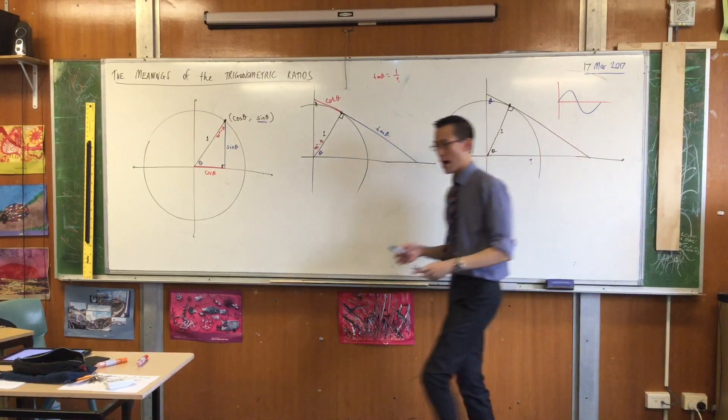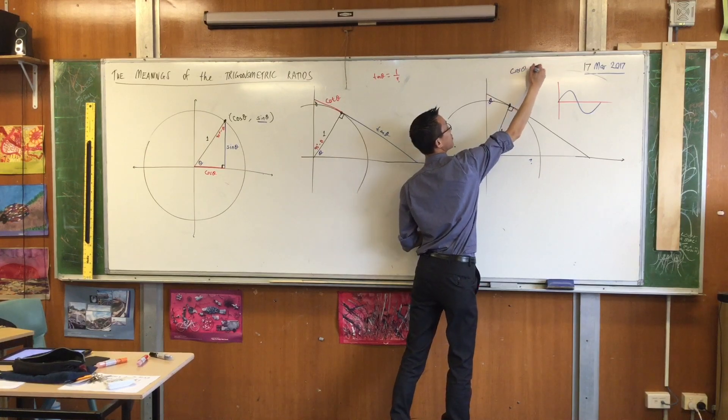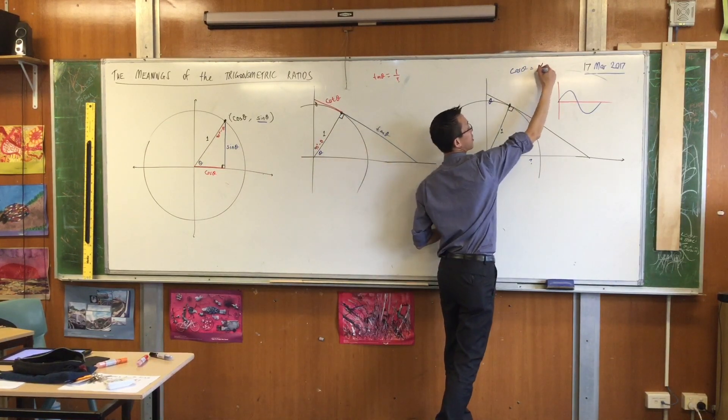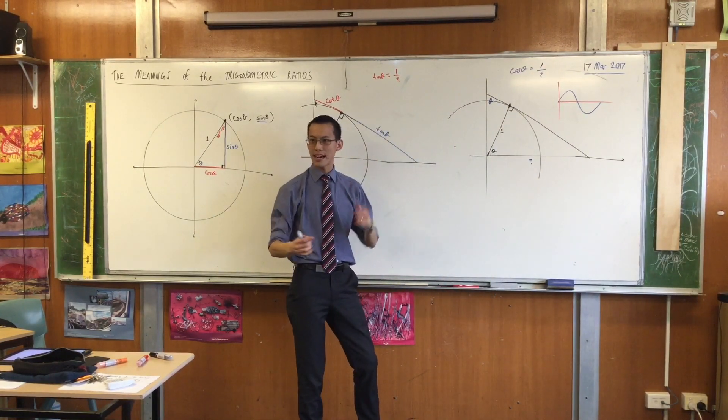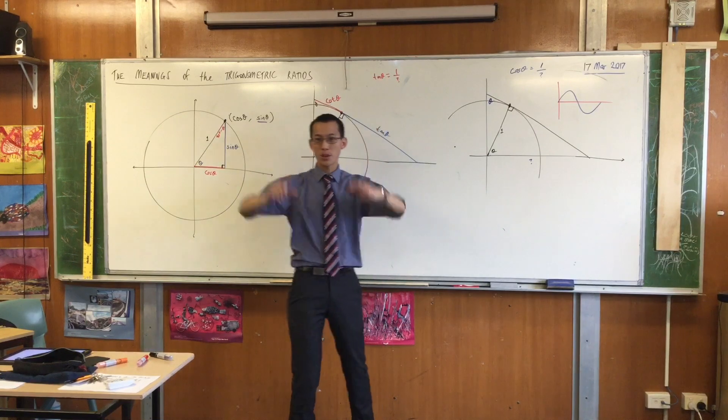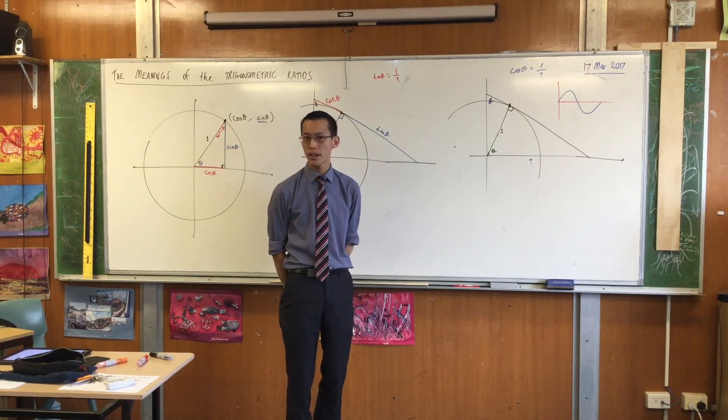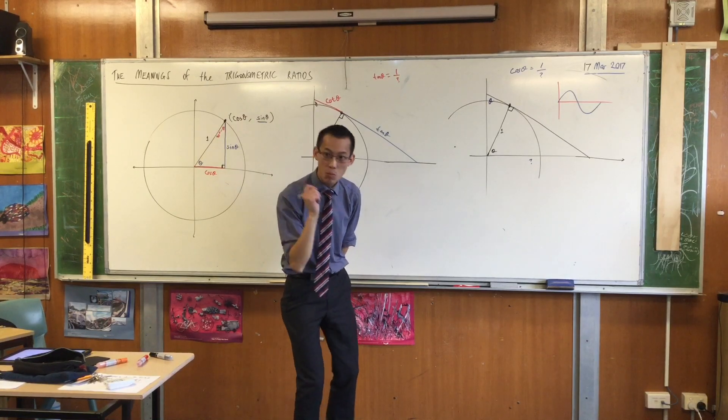So therefore, I could write in that triangle that cos theta, that's adjacent over hypotenuse, isn't it? Adjacent over hypotenuse. So just like I did over here, I'm just going to take reciprocals of both sides. What's the reciprocal of cos again? It's sec. We just defined it as that. But do you see why it is?